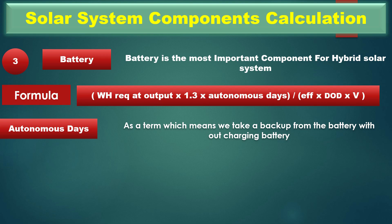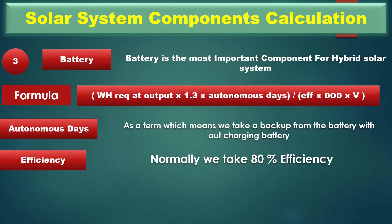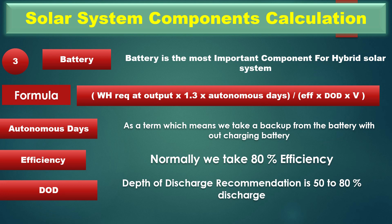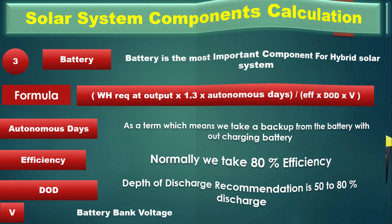Autonomous days means the backup from the battery without charging — if there is no sun and no generator, the battery still provides backup. You can express it in hours or days; if the customer doesn't specify, use a value of 1. Efficiency is normally taken as 80%. DoD (depth of discharge) — battery life depends on cycles; discharging 100% shortens life, so the recommendation is 50 to 80% discharge. V is the battery bank voltage: two batteries in series gives 24 volts, one battery gives 12 volts. This voltage is found in the inverter datasheet — mostly a 2 kW inverter uses a 24-volt system.